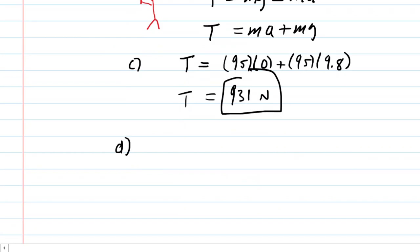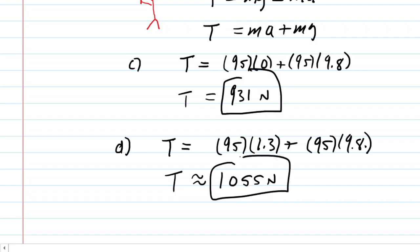And now we go to part D, and the acceleration this time was that positive 1.3. So we'll have 95 kilograms times positive 1.3 meters per second squared, plus 95 kilograms times the 9.8 meters per second squared. And we get a tension in this case of approximately 1,055 newtons. So that is the correct answer to part D.